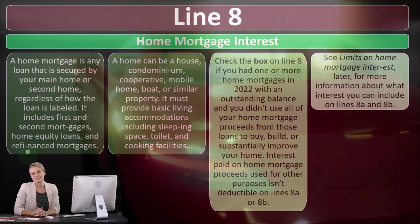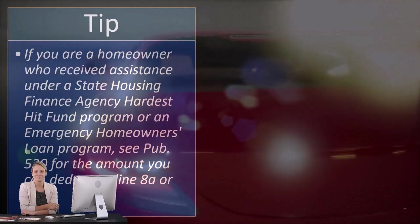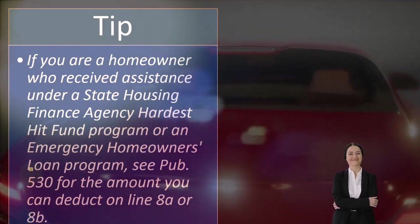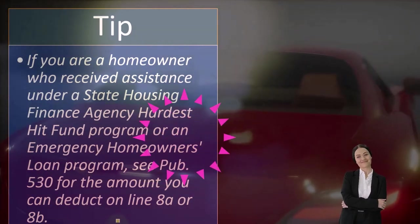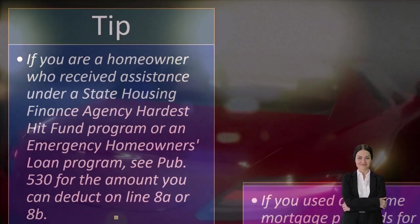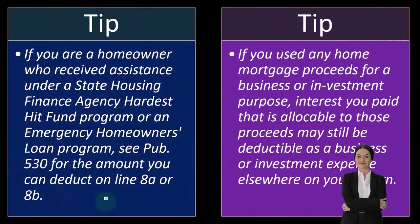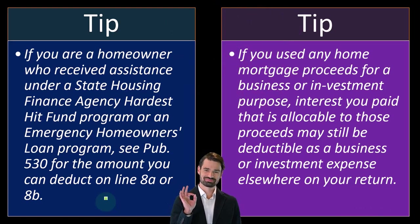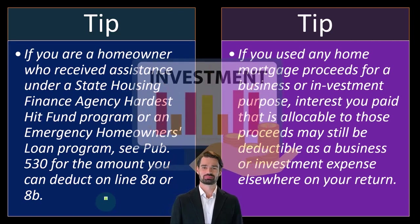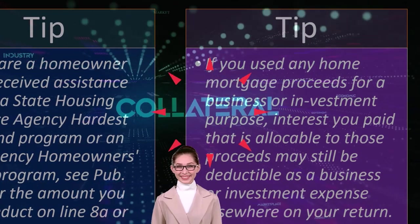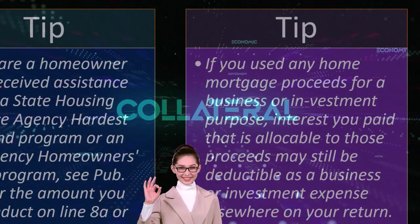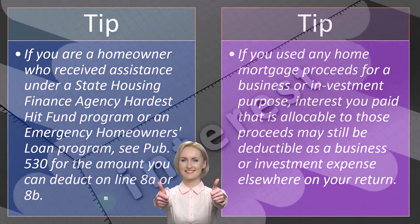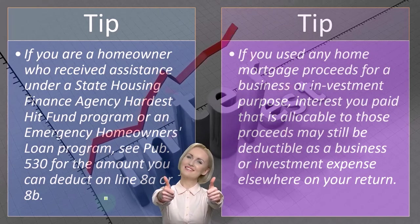If you are a homeowner who received assistance under a state housing finance agency hardest hit fund program or emergency homeowner's loan program, see Publication 530 for the deductible amount. If you used any home mortgage proceeds for a business or investment purpose, the interest allocable to those proceeds may still be deductible as a business or investment expense elsewhere on your return — even though a personal asset was used as collateral.